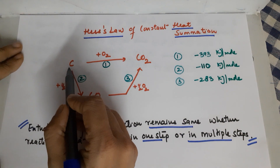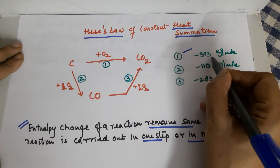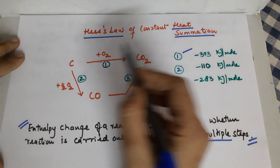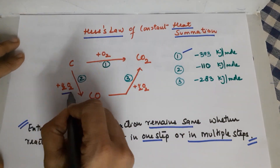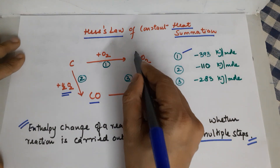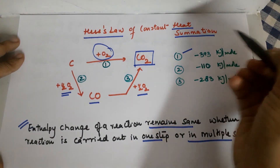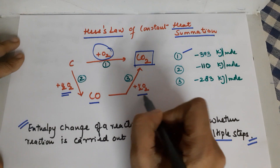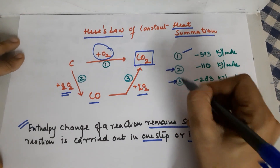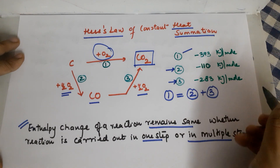Example: carbon reacts with oxygen to form CO2 — that's reaction one. Carbon's complete combustion gives CO2, with heat involved of minus 393 kilojoules per mole. The same reaction can also be carried out in two steps: first, add only half a mole of oxygen to give carbon monoxide, followed by another half a mole of oxygen to give carbon dioxide. When done in two steps, the heat evolved in step one equals the sum of heat evolved in steps two and three.